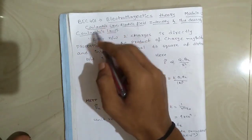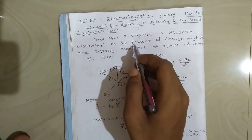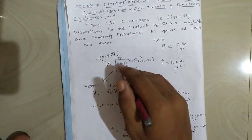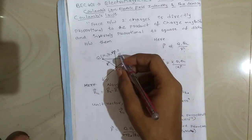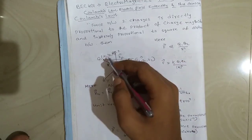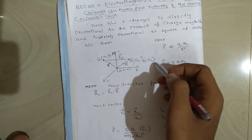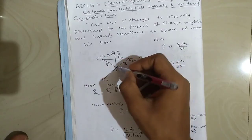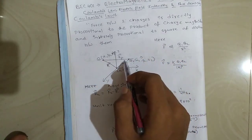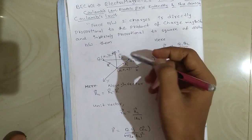Let's start with the first topic, Coulomb's Law. Coulomb's Law states that the force between two charges is directly proportional to the product of the charge magnitudes and inversely proportional to the square of the distance between them. Consider free space with x, y, and z axes. Two charges q1 and q2 are placed at coordinates (x1, y1, z1) and (x2, y2, z2). The distance from the origin to q1 is r1, and to q2 is r2, while the distance between the two charges is r12. r1 and r2 are called position vectors.